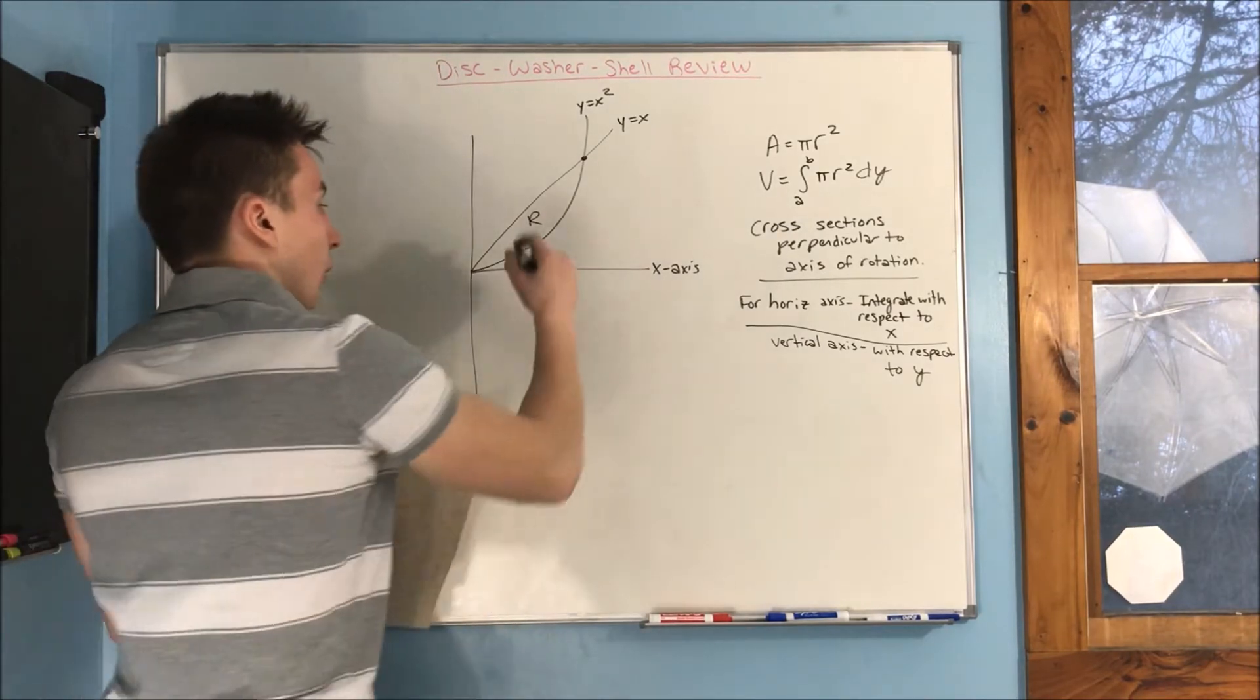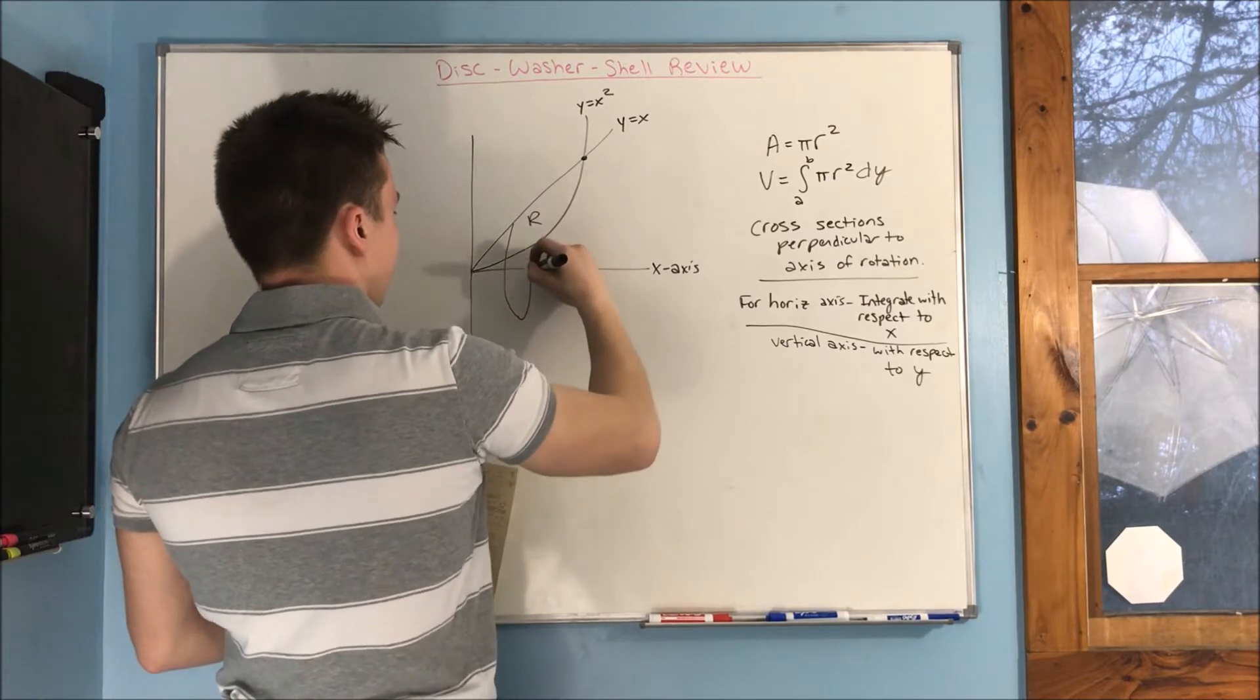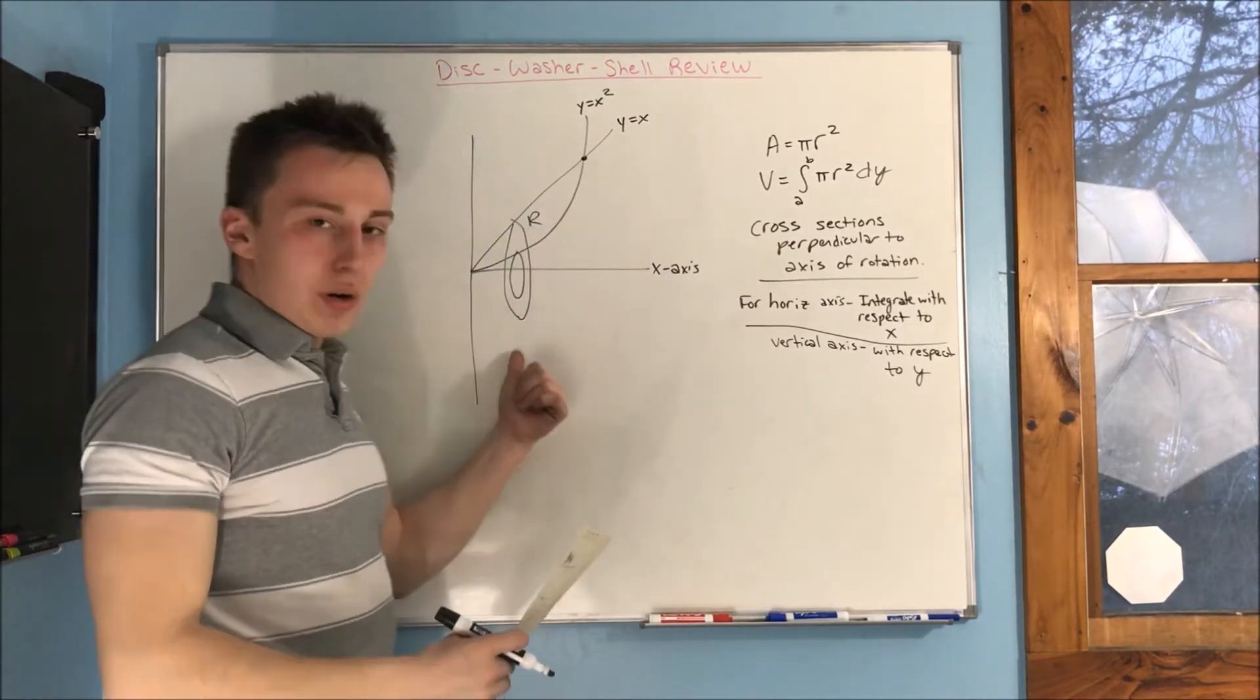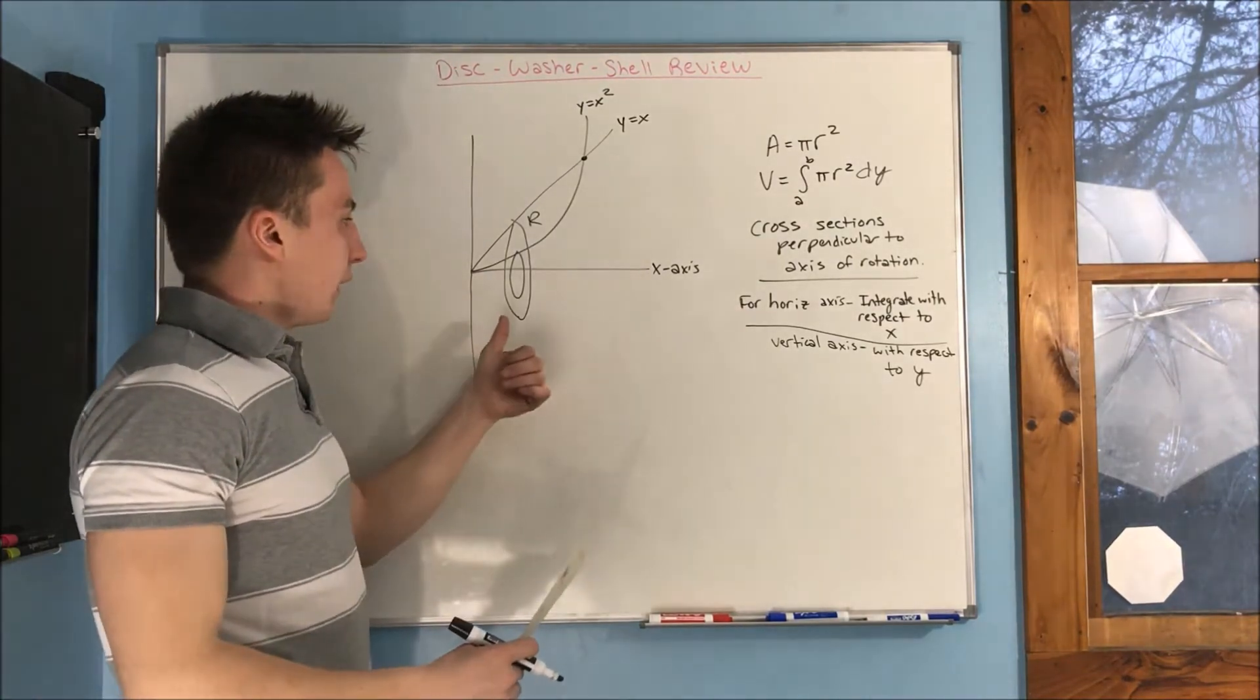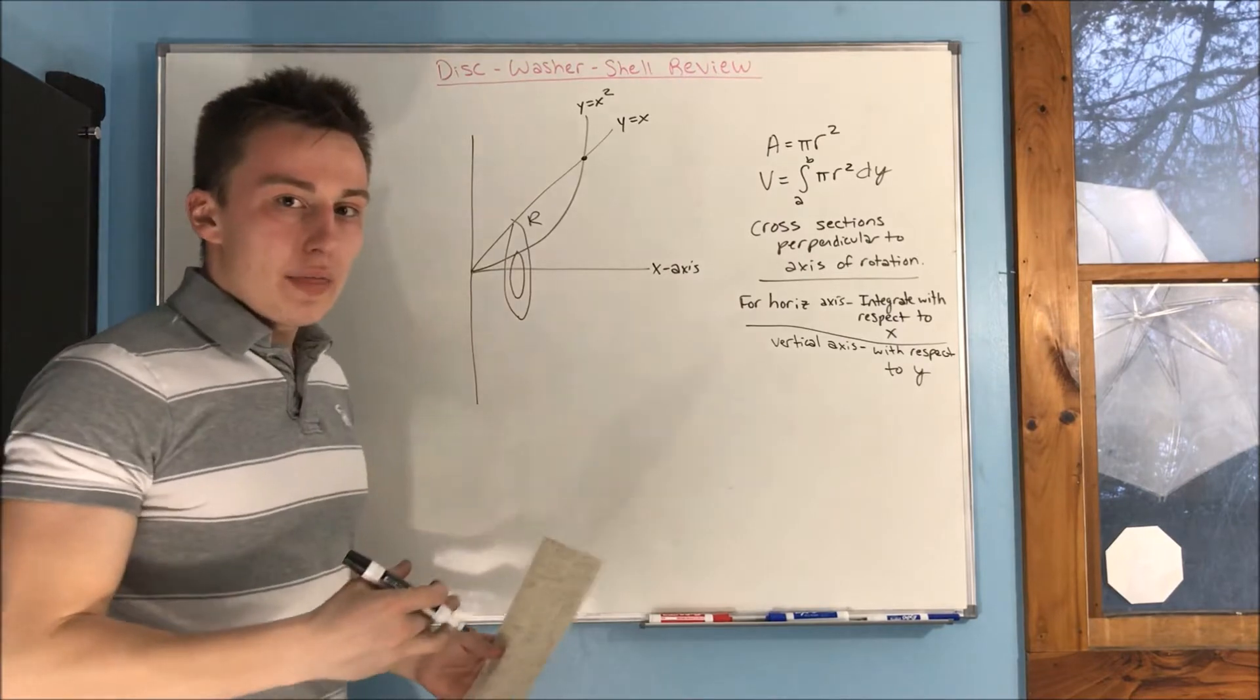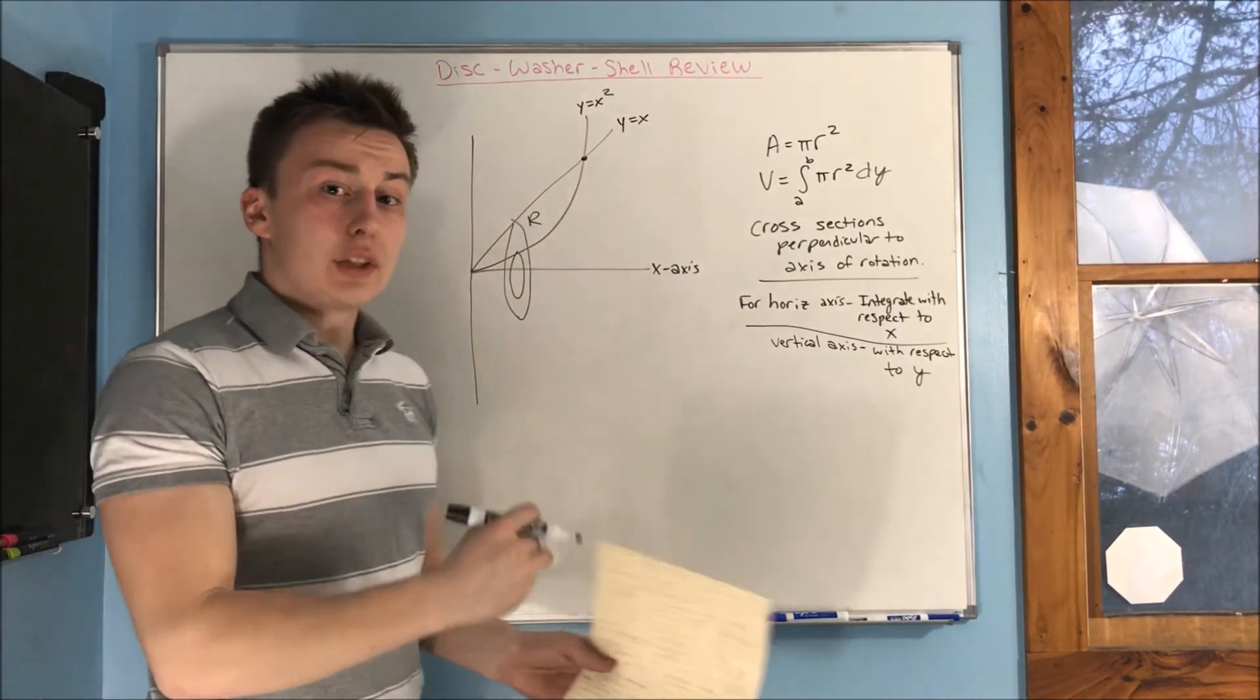When we do, we're going to end up with a solid that has cross sections of a washer. Now, these washers are hollow in the center. So there is an area in the center that we need to take out of each of our cross sections.